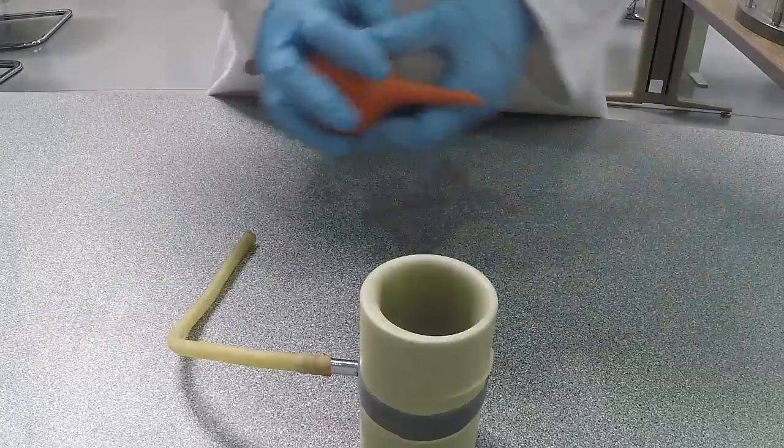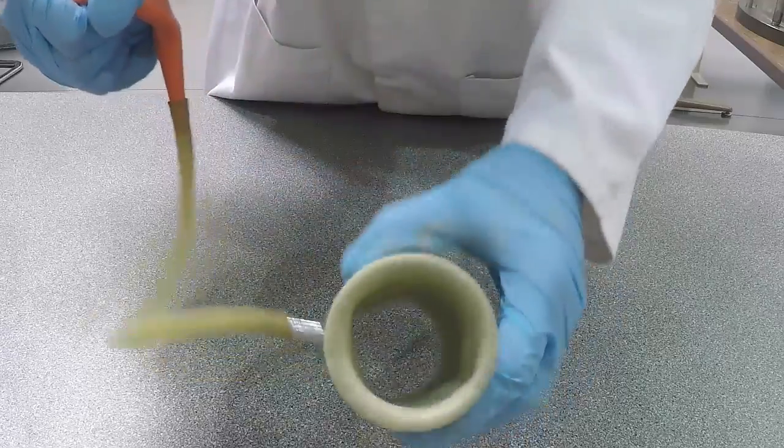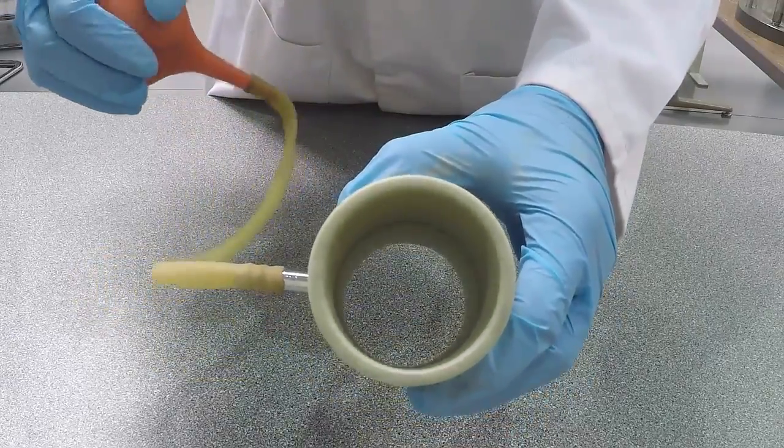The suction ball will act as a vacuum, sucking in the air between the membrane and stretcher, making it easier to slide over your specimen.